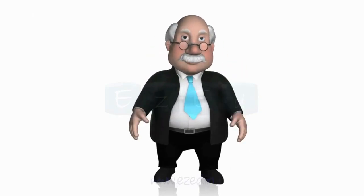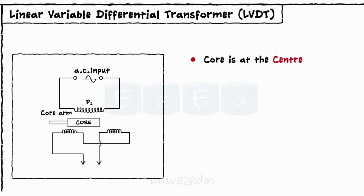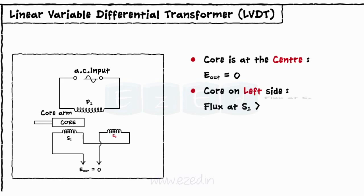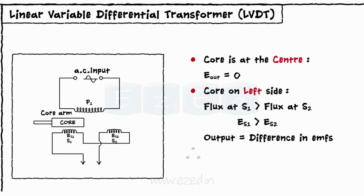Working of LVDT is as follows. When the core is at the central position, the EMF induced is zero. When the core shifts towards secondary winding S1 due to displacement, more magnetic flux gets linked to coil S1 than S2. As a result, the EMF induced in coil S1, ES1, is more than ES2. The output is the difference between the two EMF voltages. Hence, when the core moves towards coil S1, we get output as Vout equals ES1 minus ES2.